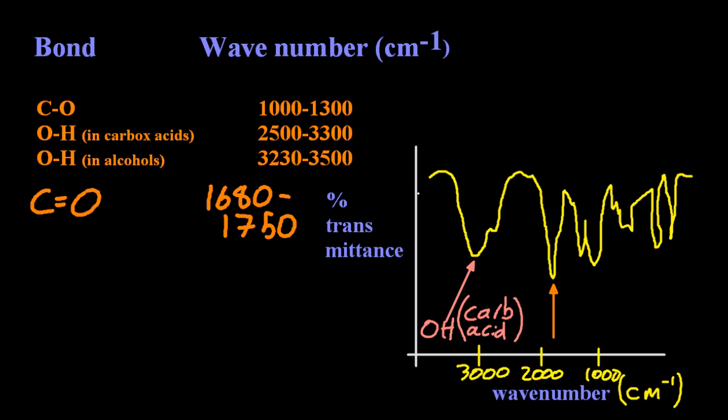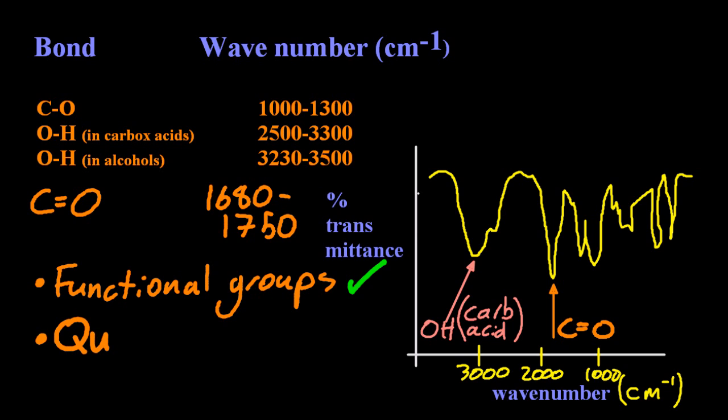Now you might be tempted to say these are functional groups being identified, but actually it's just the bond between two atoms. Often it's functional groups and I'm going to put a tick there, but sometimes the IB is fussy and really it's the bond between two atoms that you're identifying, which is often the functional group.